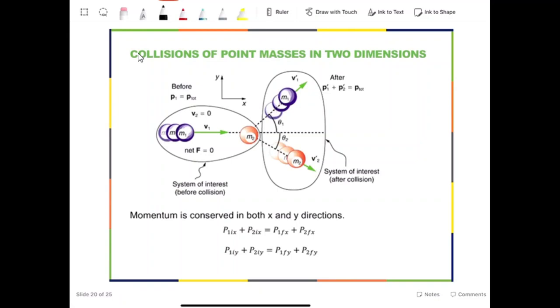Let us consider a general collision where the objects don't have to move in one straight line. Instead, they may move in any direction after the collision, but they still stay in a flat surface. This is called a two-dimensional collision.